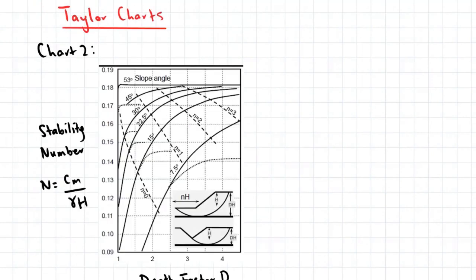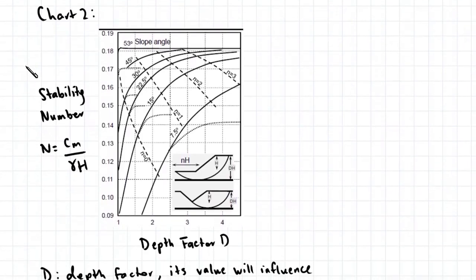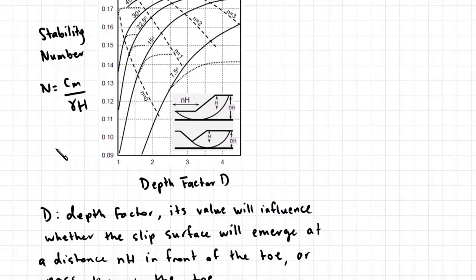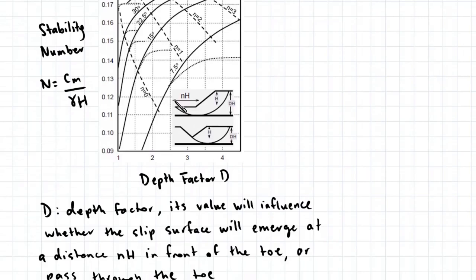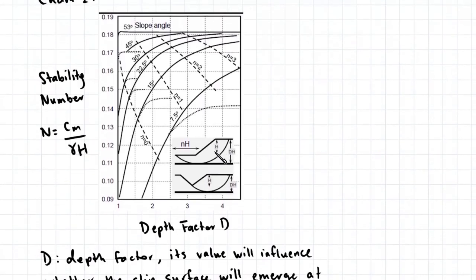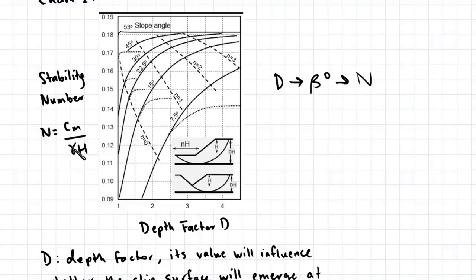Chart two is a similar case, except on the horizontal axis we have a depth factor D. The depth factor D is simply a factor which influences whether the slip surface will emerge at a distance NH in front of the toe, or whether it will simply pass through the toe — it is multiplied by the height of the slope. Once you find your depth factor D, you project upwards to your slope angle, and from there you project horizontally across to get your stability number. Because we know the unit weight of the soil as well as the height, we'll be able to find our mobilized cohesion and from there our factor of safety.